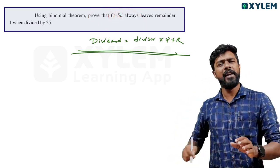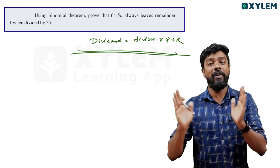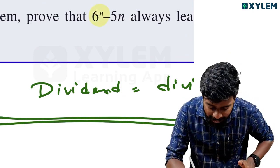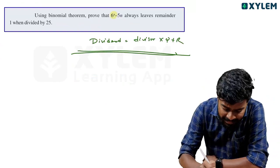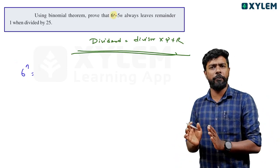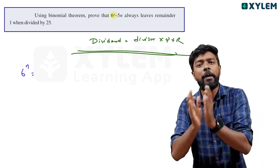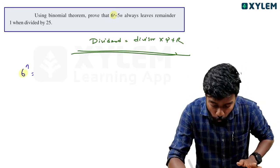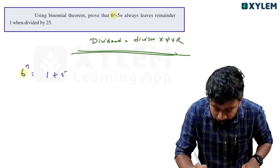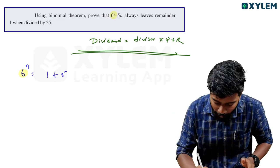6 raised to n minus 5n equals 1. So 6 raised to n can be written as 1 plus 5 raised to n, because 1 plus 5 equals 6. Now I will expand this using the binomial theorem.